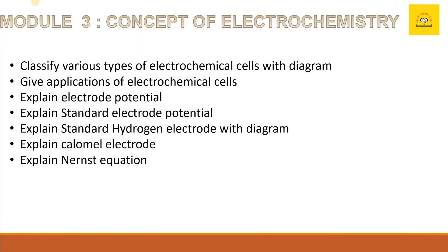The second chapter is omitted. Moving to the third chapter — one of the most easy and most predictable questions from this chapter are: explain electrode potential, explain standard electrode potential, explain calomel electrode with a proper diagram, and the Nernst equation, which is one of the important questions repeated many times.